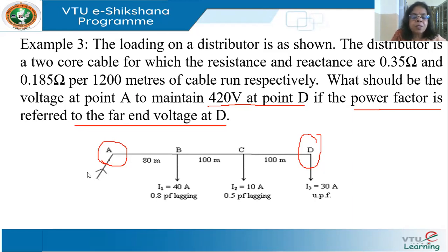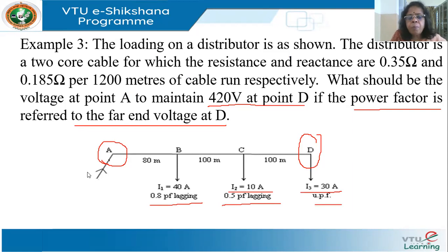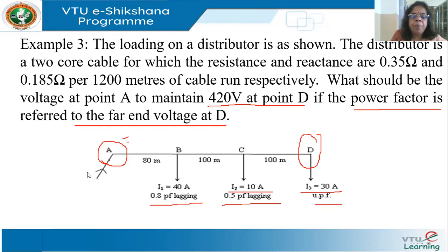Now look at the three loads: 40 amperes at 0.8 pf lagging, 10 amperes at 0.5 pf lagging, and 30 amperes at unity pf. This is a simple problem — can you get the approach? The first thing is you draw the figure. I want to calculate VA, which will essentially be VD — the receiving end voltage — plus the total drop in the line.